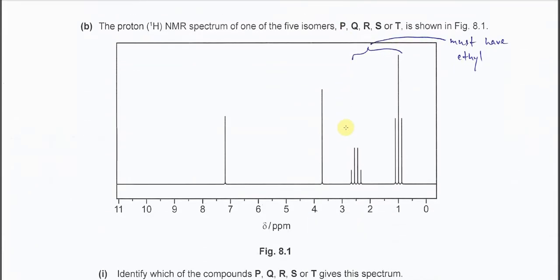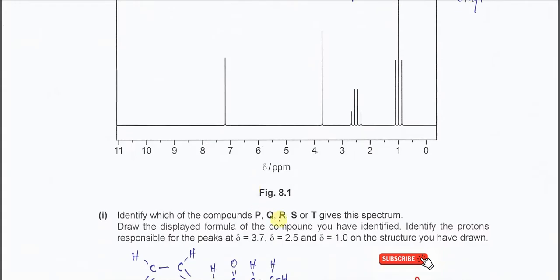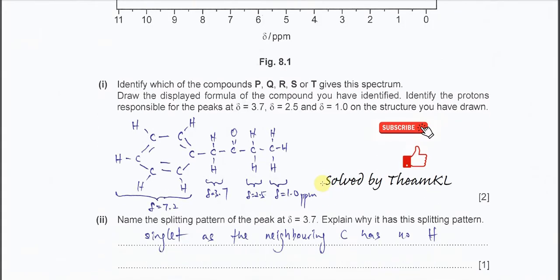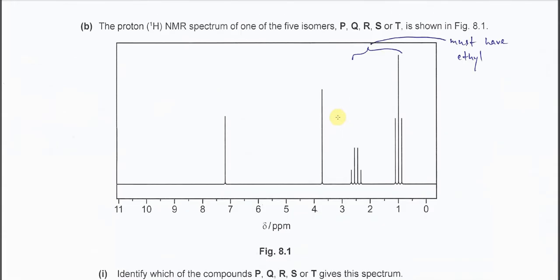For part B, the proton NMR of one of the isomers P, Q, R, S, T is shown in Figure 8.1. Identify which compound gives this spectrum, draw its display formula, and identify the protons responsible for the peaks at 3.7, 2.5, and 1 ppm.